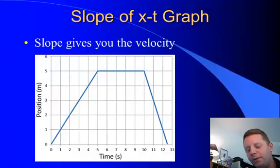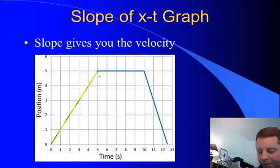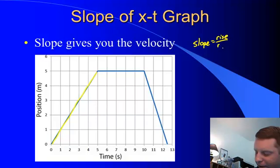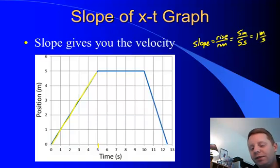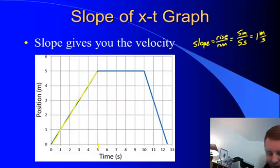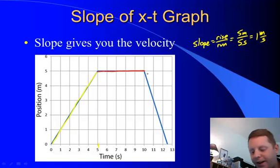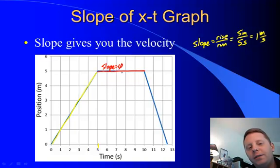The position-time graph shows an object's position as a function of time, but we can learn a lot more. If we take the slope of the first section — slope is rise over run — in that first five seconds we have a rise of five meters over five seconds, giving us a slope of one meter per second. That's our velocity. The slope of the position-time graph gives you velocity. Between five and ten seconds, the slope is zero — a horizontal line — therefore the dog's velocity is zero.